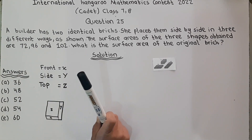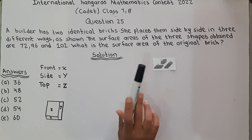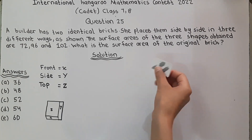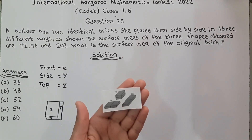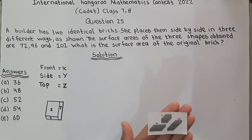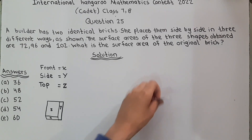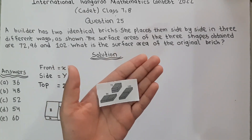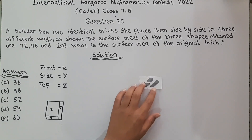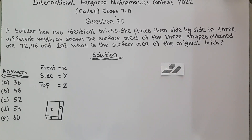A builder has two identical bricks means a builder has two bricks which are of the same size. She places them side by side in three different ways as shown. The surface area of these bricks are obtained as 72, 96, and 102. What is the surface area of the original brick?